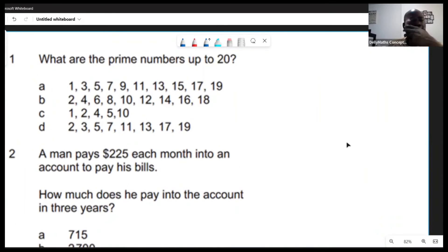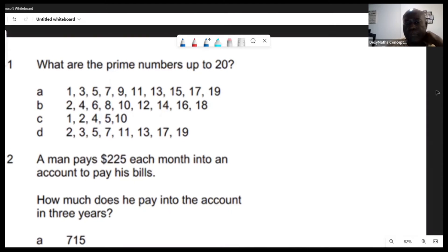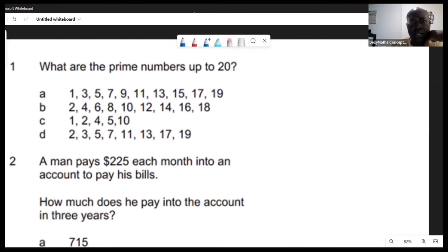In this section, we're looking at the CSEC angles state three paper. Here's a question that reads: what are the prime numbers up to 20? First, we want to understand what prime numbers are. Prime numbers have two factors - one and itself. Those are special numbers that carry two factors: one and itself.